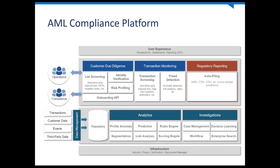Before I delve into the specifics around regulator reporting, I want to do a quick overview of the Caseware AML platform because it provides a lot of different functionality, not just regulator reporting. We're talking about customer due diligence, where we're doing list screening during the onboarding process or screening the senders and receivers on transactions, identity verification, risk profiling, and transaction monitoring where we look for suspicious activities or transactions. This will filter into the regulator reports filed with different regulators — identifying structured transactions or any transactions above a particular threshold.